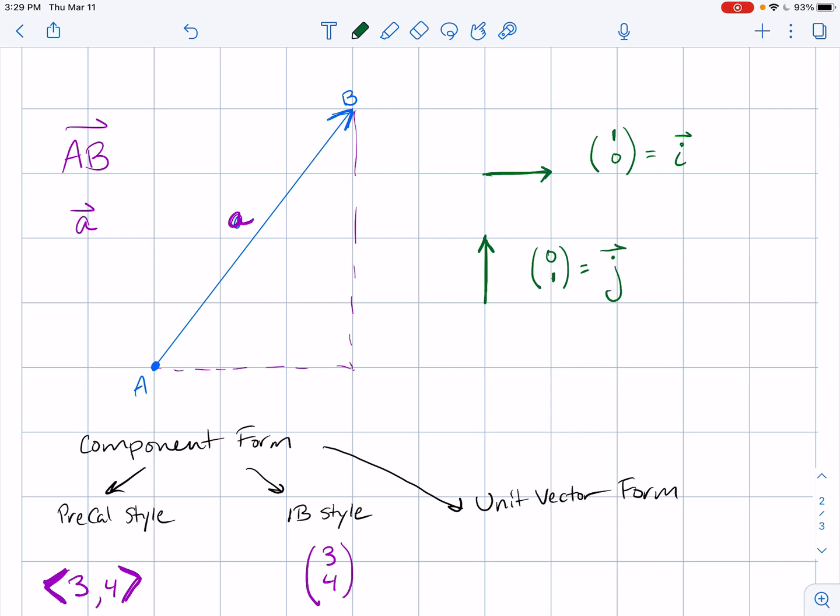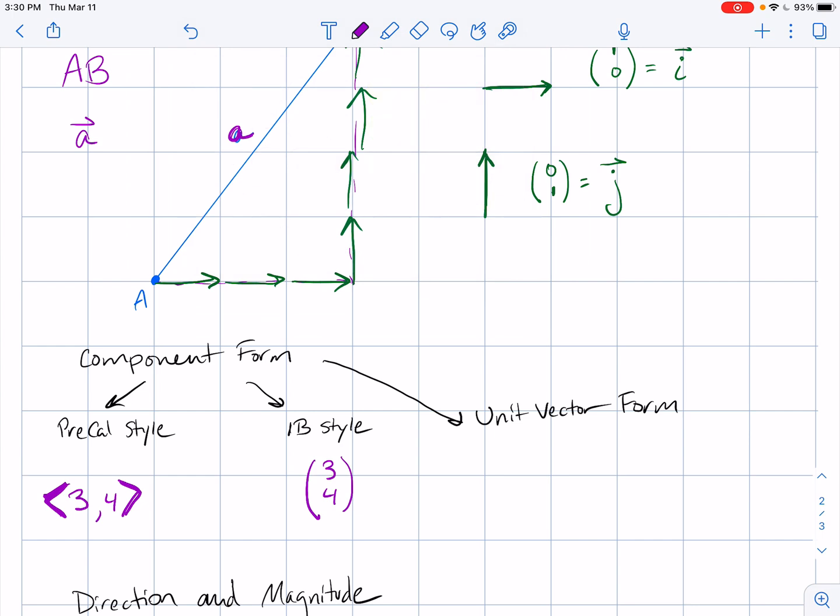Now you'll notice that this vector, our vector AB, has three little i vectors. I could pick this up and put it one two three, and then I have one two three four of this vector j. So we can describe this as being, you could start here at A and you could do three i's plus four j's and that would be the resultant, this vector AB. Vector AB in unit vector form would be 3i plus 4j.